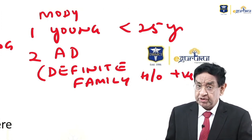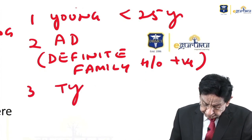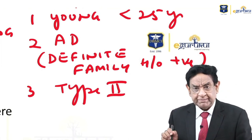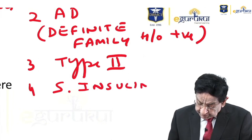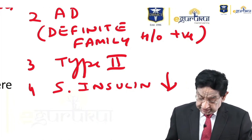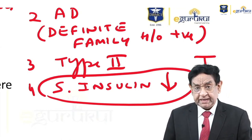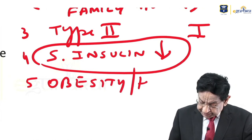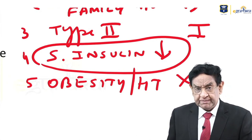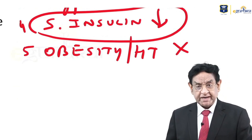MODY is a type of type 2 diabetes, but the serum insulin level is reduced — something very strange. This finding is normally seen in type 1 diabetes. Also, despite being type 2 diabetes, features like obesity and hypertension are not present — the patient is a simple non-obese, normal person.